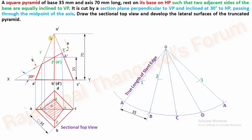Next is 3': take O' as center and 3' as radius to fix point number 3. To minimize one more step: since 2' and 4' lie at the same height, use the same radius — O' to 2'1' as radius — to complete point 4 on OD. Then use O' to 3' as radius with O as center to complete point 3 on OC.